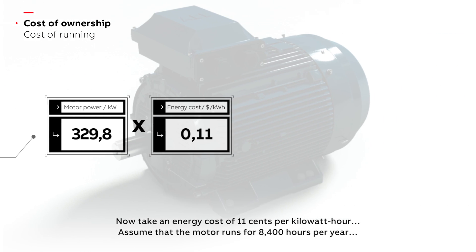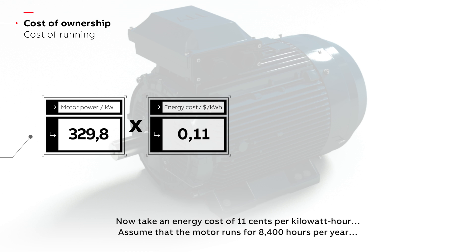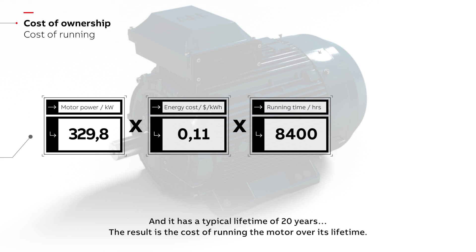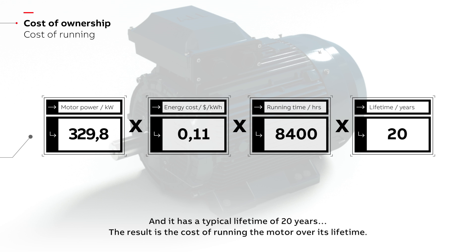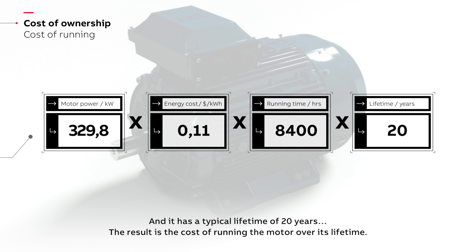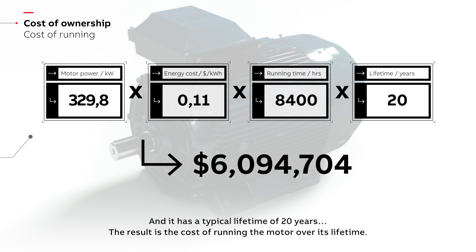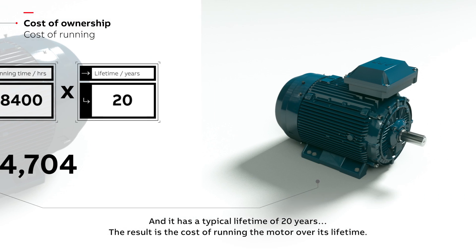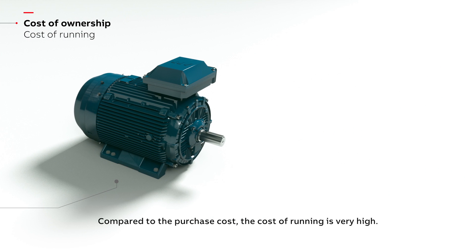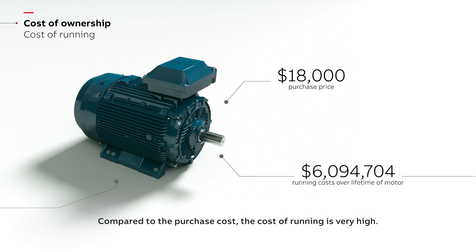Now take an energy cost of 11 cents per kilowatt hour. Assume that the motor runs for 8,400 hours per year and it has a typical lifetime of 20 years. The result is the cost of running the motor over its lifetime. Compared to the purchase cost, the cost of running is very high.